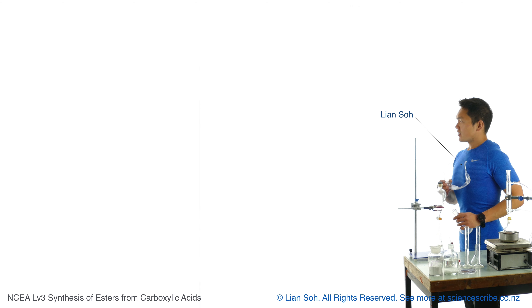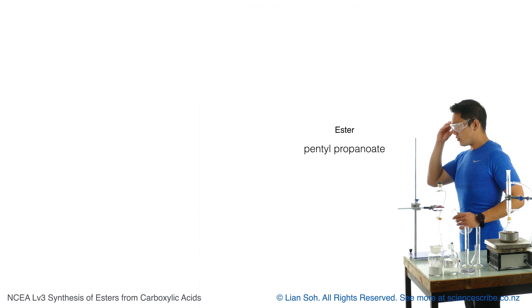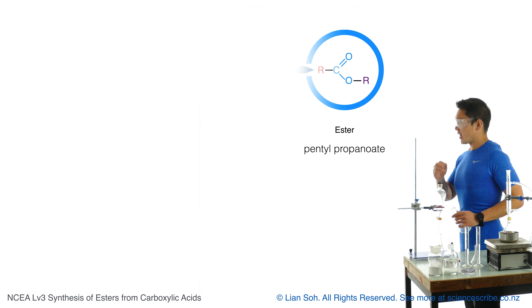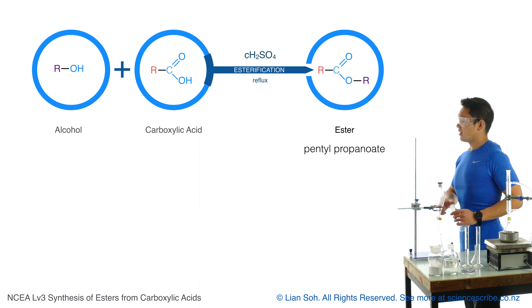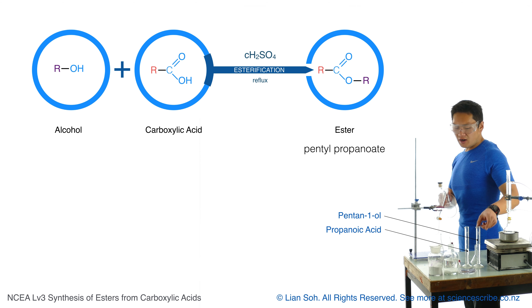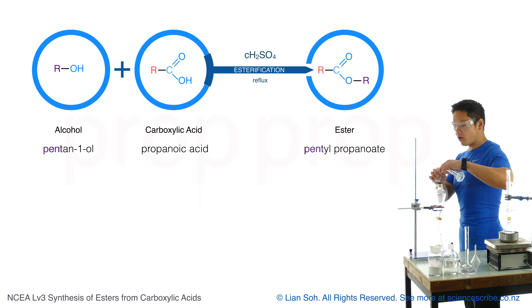To make an ester such as pentyl propanoate, I can use an alcohol and a carboxylic acid. Just from the name, it means that I need to use pentan-1-ol and propanoic acid.